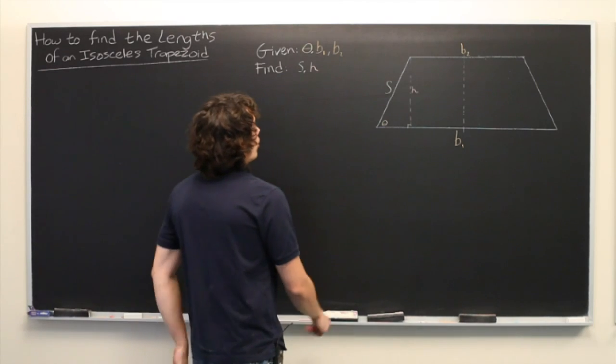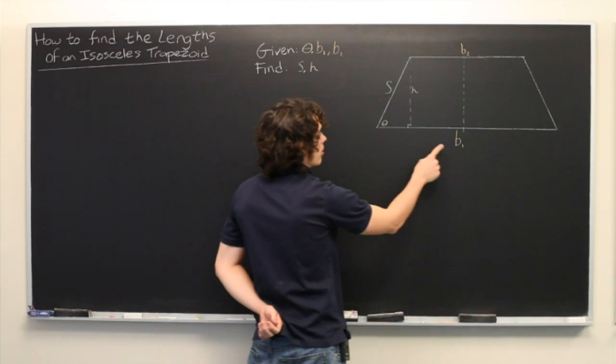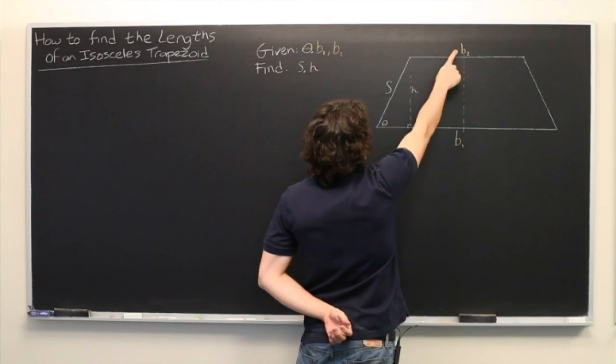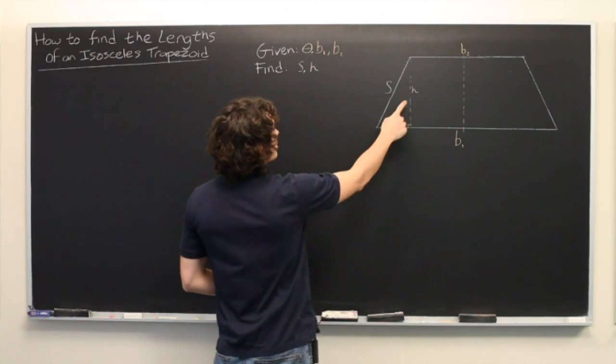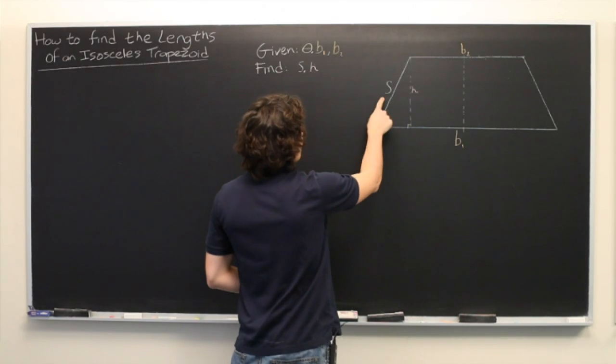Here we're assuming that we already know the angle theta, the bottom base B1, and the top base B2. What we're trying to solve is the height H and the other side, S.